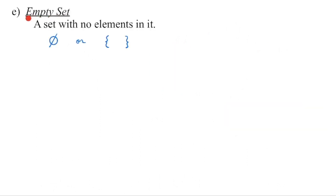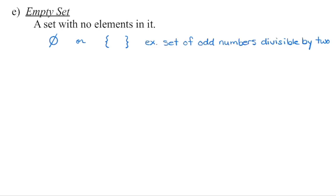An empty set is a set containing no elements. For example, teams within the Pacific Division of the NHL that are currently located in Sweden — there are none. We can denote that two ways: either a circle with a slash through it, or just a set of braces with nothing in the middle. Both symbols indicate an empty set. A mathematical example of an empty set would be the set of odd numbers divisible by two — there is no odd number divisible by two.